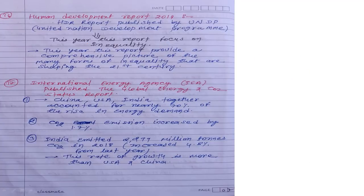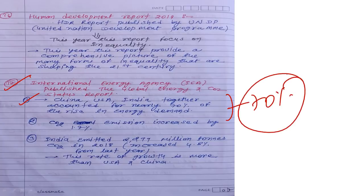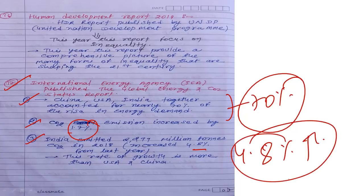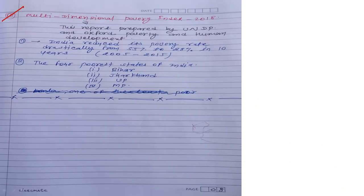Seventeenth current affair: IEA Global Energy and CO2 Status Report. Key facts — China, USA, and India together accounted for nearly 70% of the rise in global energy demand. CO2 emissions increased by 1.7% globally. India emitted 2,299 million tons of CO2 in 2018, a 4.8% increase compared to the previous year — the highest growth rate among major countries.